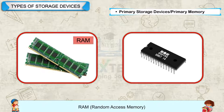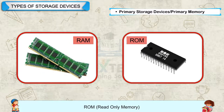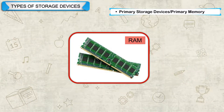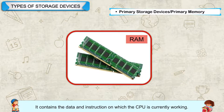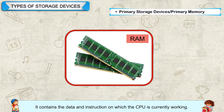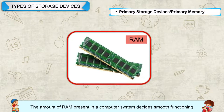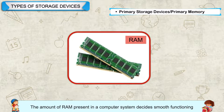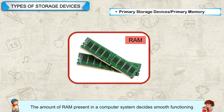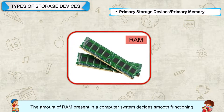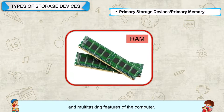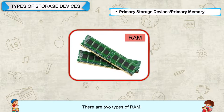RAM — Random Access Memory, and ROM — Read-only Memory. Random Access Memory (RAM) contains the data and instructions on which the CPU is currently working. It is volatile. The amount of RAM present in a computer system decides the smooth functioning and multitasking features of the computer. There are two types of RAM.